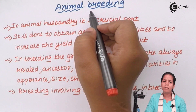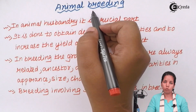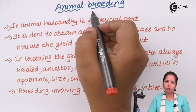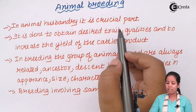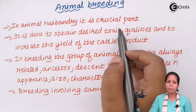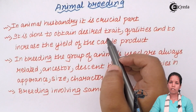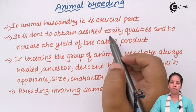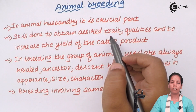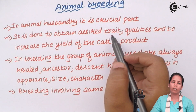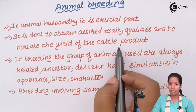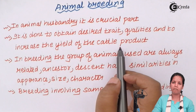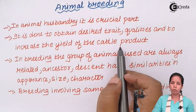Animal breeding is one of the potent sources to obtain income in rural India, and modern India does that as well. Animal husbandry breeding of animals is done to obtain better quality of milk or milk products, and that's a very crucial part of animal husbandry. When breeding of dairy farm or poultry animals is done, the goal is to obtain desired traits — for example, greater quantity of milk or milk products. Quality and quantity are always the key factors; the whole point is to increase the yield of cattle products such as milk, meat, or eggs.